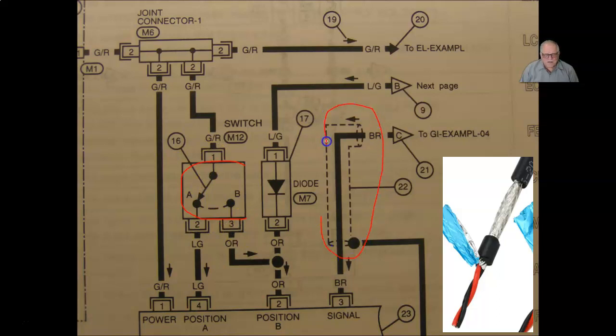This part over here, we haven't talked about yet. This would be a twisted and shielded cable. And I put a picture of it over here. They take the wires inside and they twist them together. That helps protect the wires from electromagnetic interference.